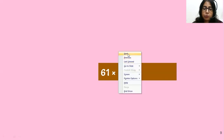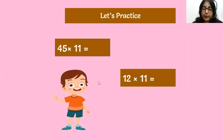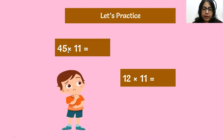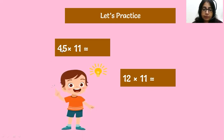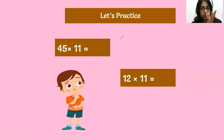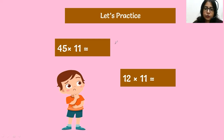Let's do more and more practice — practice makes a man perfect. 45 into 11: four, then space, then five, then four plus five is nine. So four, nine, five — in your mind only. We haven't used a single finger, we haven't sketched anything in the copy, and we are giving the answer in two seconds.